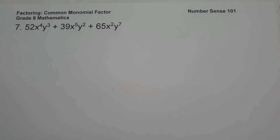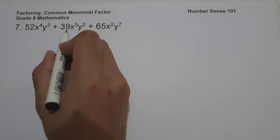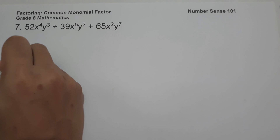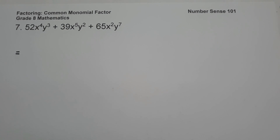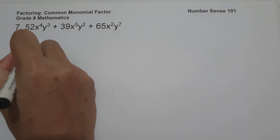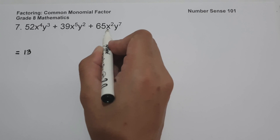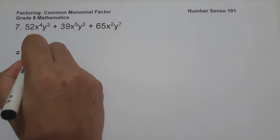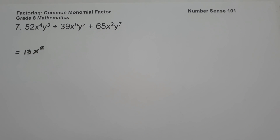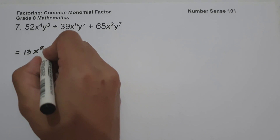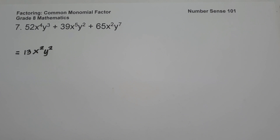On our last example, we have 52x⁴y³ plus 39x⁵y² plus 65x²y⁷. Just like in our previous examples, let us first find the greatest common monomial factor. The GCF of 52, 39, and 65: since all are divisible by 13, the greatest common factor is 13. For x raised to 4, x raised to 5, and x squared — since x squared is the lowest exponent, x squared is our greatest common factor. And in variable y, y squared is the lowest exponent, so the GCF is y squared.